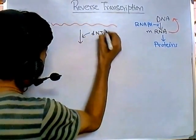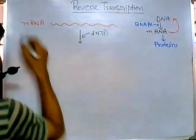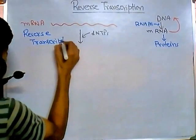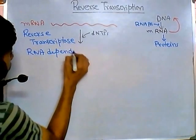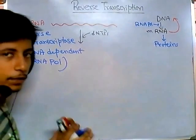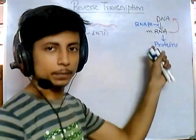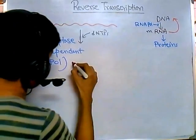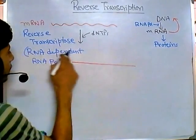During this process, we need to add dNTPs and the unique enzyme called reverse transcriptase. Reverse transcriptase is designated as an RNA-dependent DNA polymerase, whereas the normal RNA polymerase is a DNA-dependent RNA polymerase. Once we use this reverse transcriptase enzyme, an mRNA template is used and a new strand of DNA is produced.